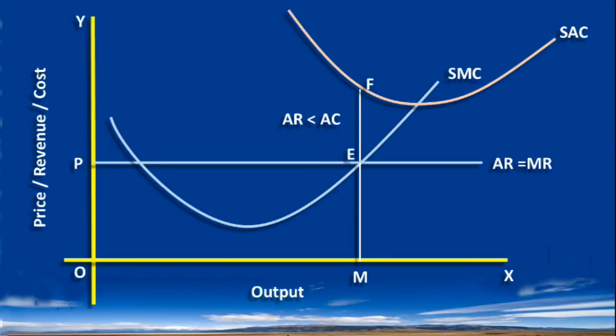Total loss is EF times OM. The area P, E, F, H is the total loss.